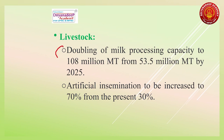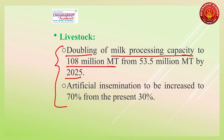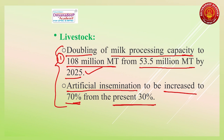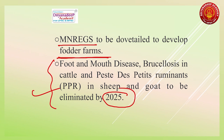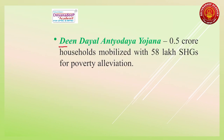For livestock, two important targets: first, milk processing capacity will be doubled to 108 million metric tonnes from the current 53.5 million metric tonnes by 2025. Second, artificial insemination will be increased to 70 percent from the current 30 percent. MGNREGA will be developed to create more fodder farms. By 2025, foot and mouth disease, brucellosis in cattle, and Peste des Petits Ruminants in sheep and goat will be eliminated.